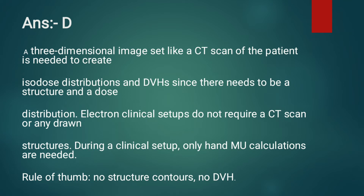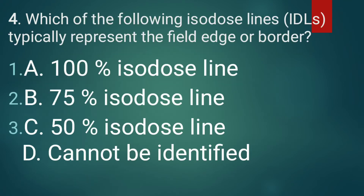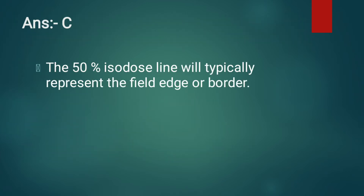Question 4: Which of the following isodose lines typically represents the field edge or border? The correct answer is option C, the 50% isodose line. The 50% isodose line typically represents the field edge or border.